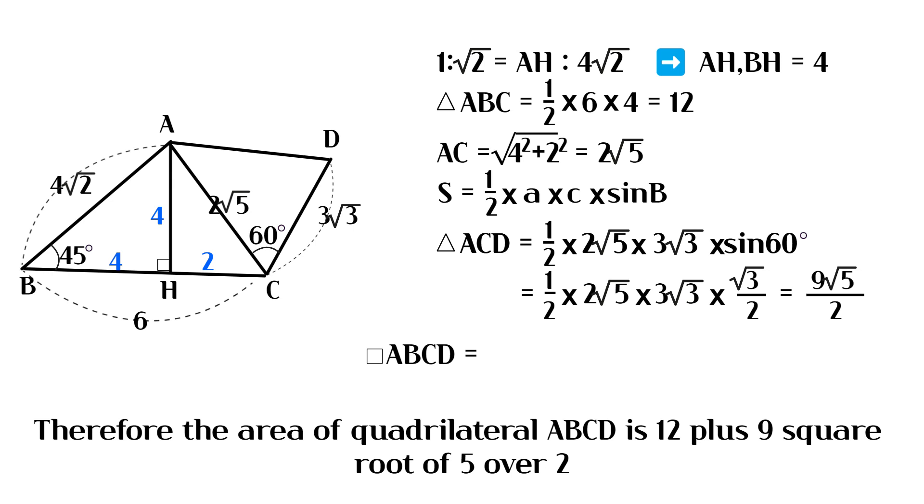Therefore the area of quadrilateral ABCD is 12 plus 9 square root of 5 over 2.